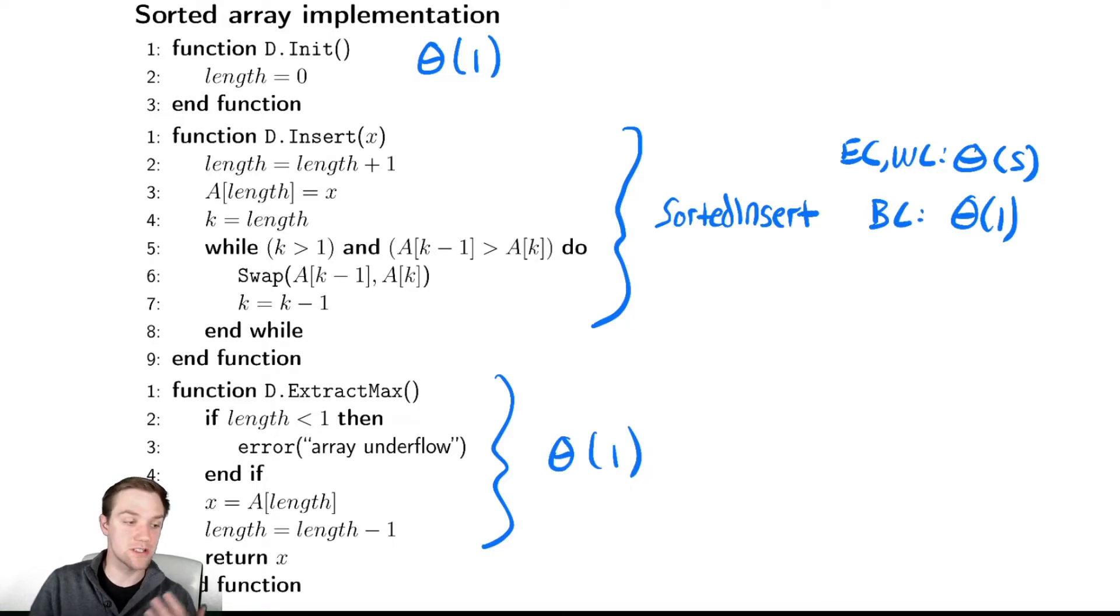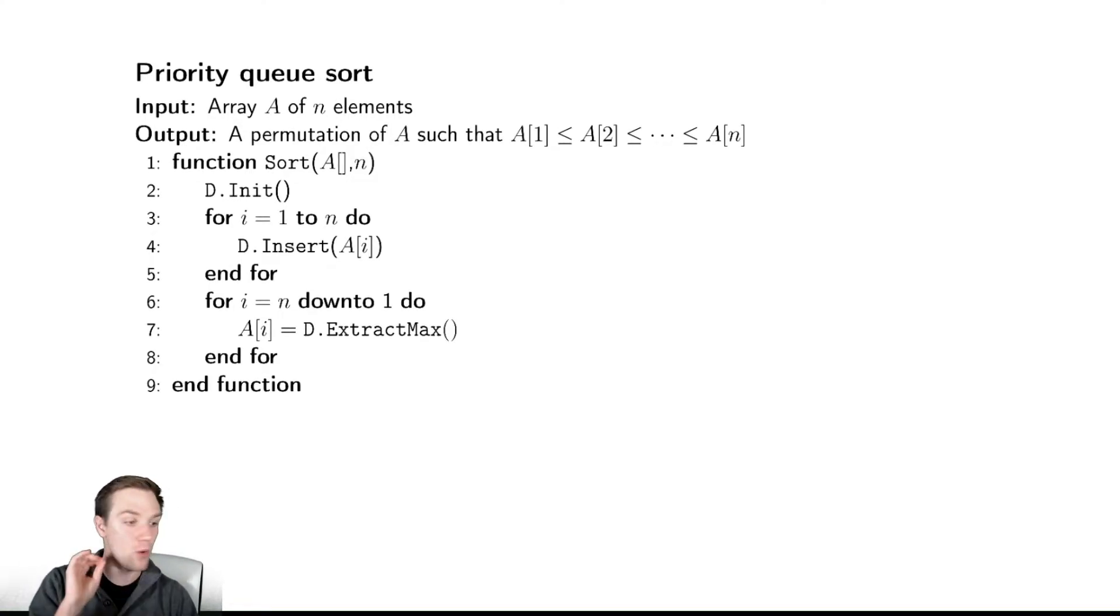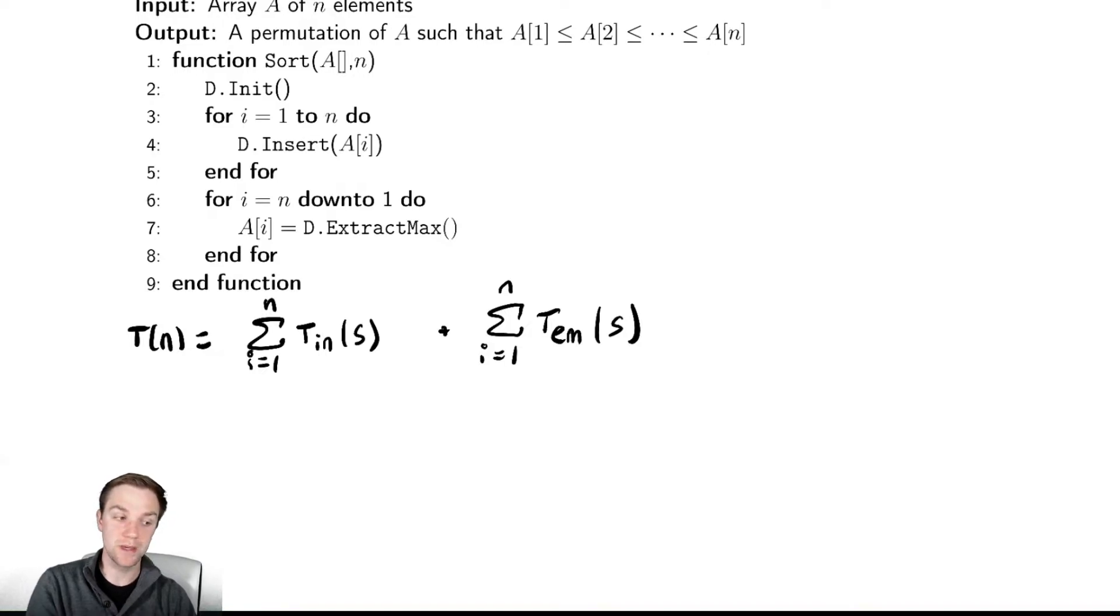If we're trying to understand these data structures and how they impact runtimes, maybe we should reinvestigate a method we used when talking about heaps - heap sort. Let's talk about priority queue sort, where we've made no assumptions about the data structure yet. What is the runtime T of n? It's the sum from i equals 1 to n of the time to insert as a function of the size, plus the sum from i equals 1 to n of the time to extract max as a function of the size. This code is identical to what we examined for heap sort, just abstracted into a data structure called d that we're inserting elements into and extracting from.